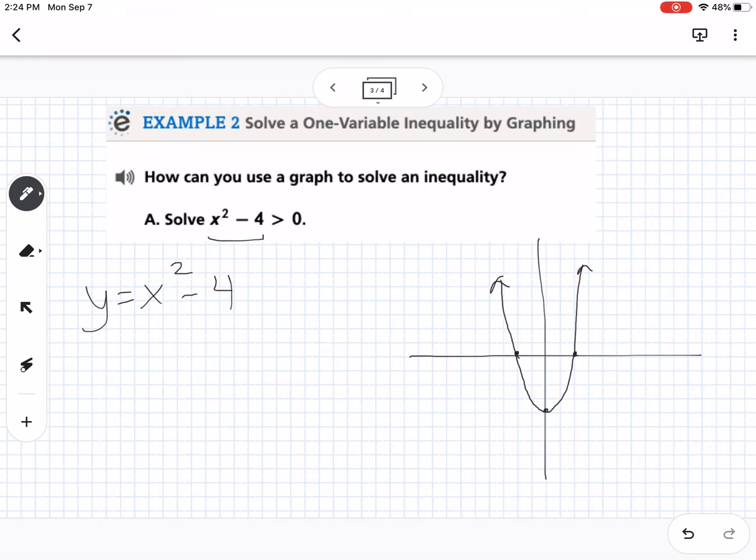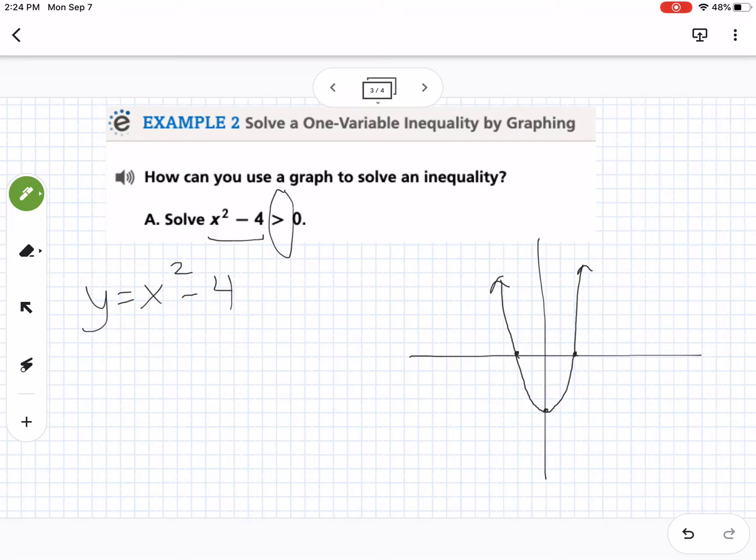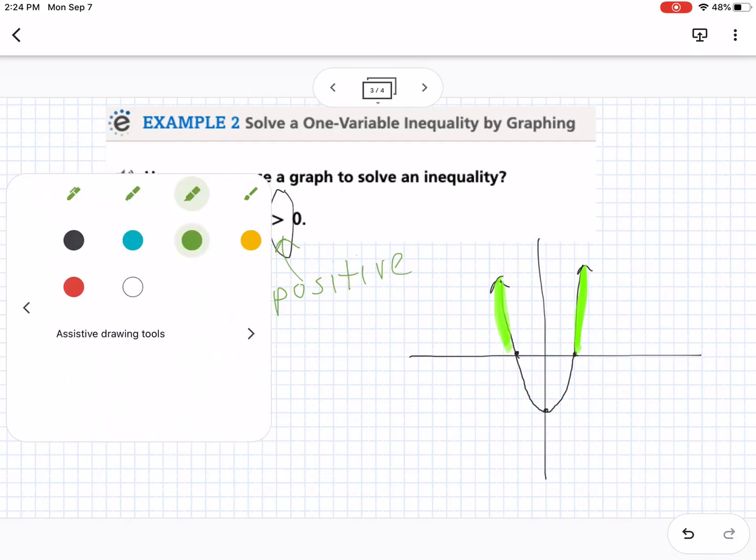So, there's our graph. What you have to pay attention to is that symbol right there. It depends on which direction that's opening, and it also depends on is it or equal to or not. So, what this is asking us is where is our graph greater than 0, or another way of saying that is where is our graph positive? This part right here is positive, and this part right here is positive. So, then we just have to work on how do we write that.